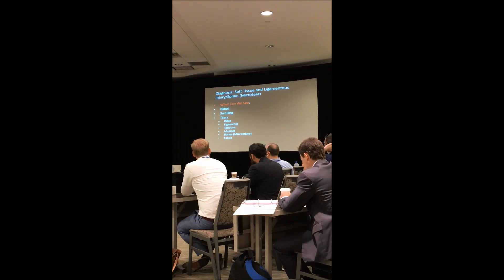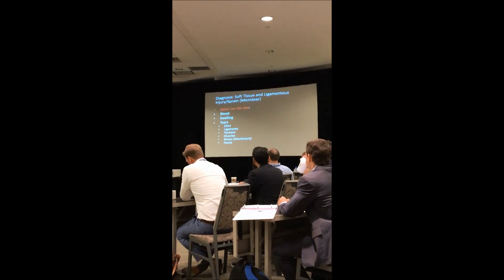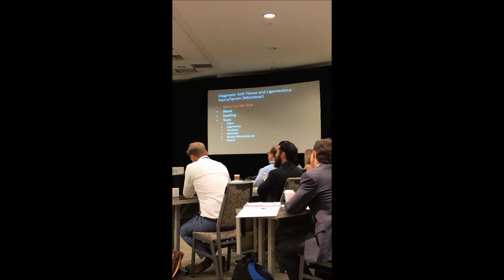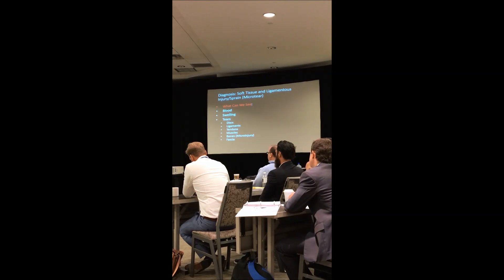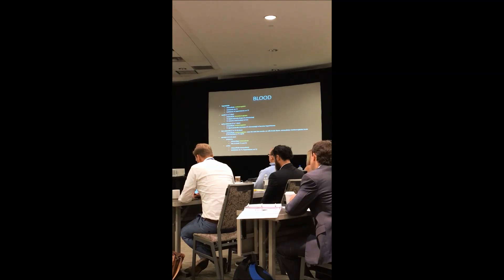Soft tissue and ligament injuries, sprains, and micro tears — what can we see with MRI? We see blood, swelling, tears of the discs and ligaments, tendons, muscles. We see micro injury of the bones on SPECT scans — abnormal activity, the bone turning over, trying to rebuild itself because it's been injured. That's why the bone scan is positive. And we can look at fascial tears, fasciitis, and all kinds of findings with MRI.